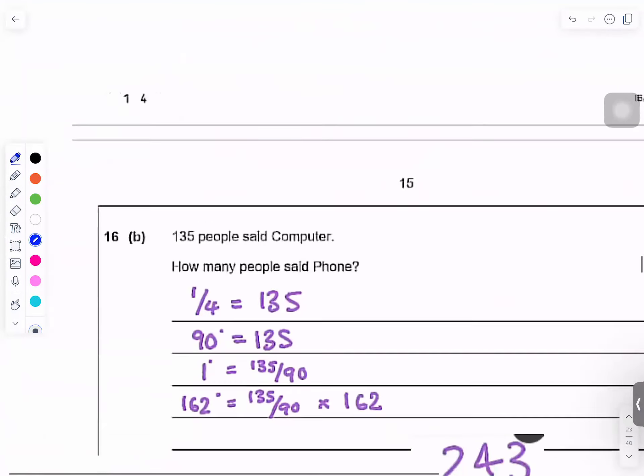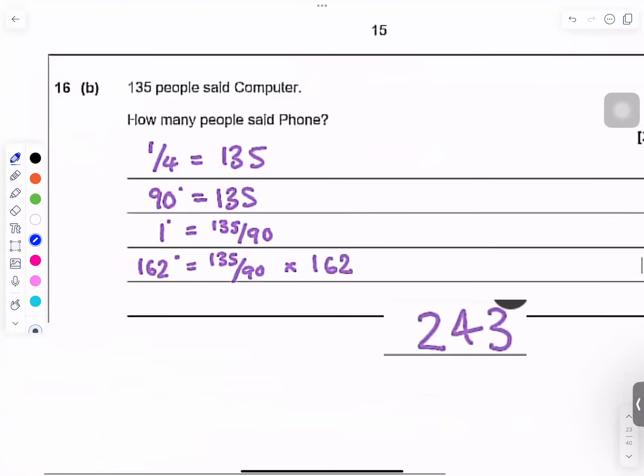So 90 for computer. If you look at the question, it says 90 is equals to 135. How many people said phone? So if one quarter, 90 over 360, is one over four, so one quarter of the people said computer, and that number is 135 people.